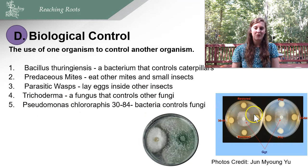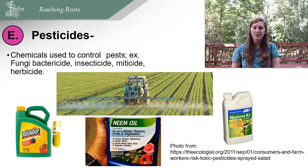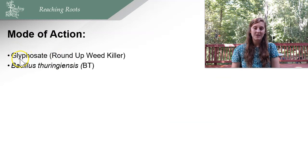You can also use pesticides to control pathogens — chemicals such as fungicide, bactericide, insecticide, miticide, and herbicide. Different pesticides have different modes of action. Let's go over the mode of action of glyphosate, known as Roundup weed killer, and the mode of action of Bacillus thuringiensis, or BT for short.